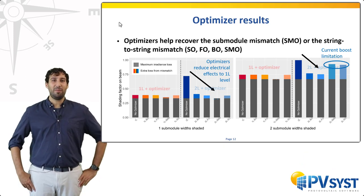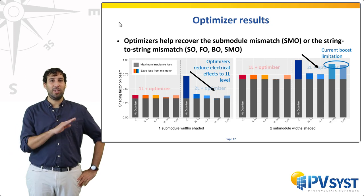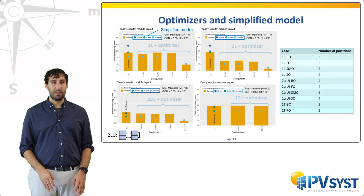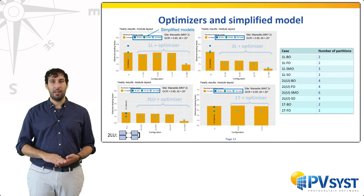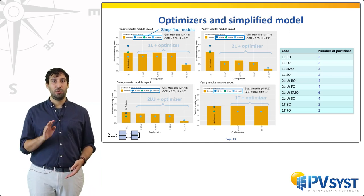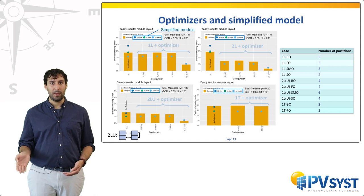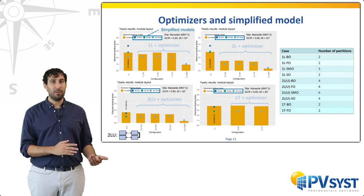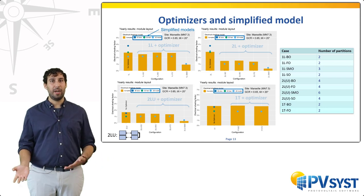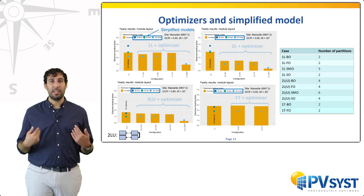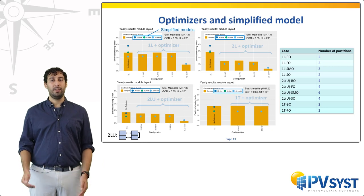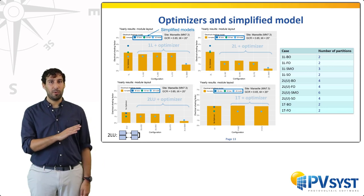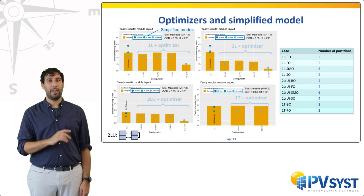Here we show that the simplified model can replicate most situations quite systematically. The four plots selected cover the most common cases: 1L, 2L, 2LU (meaning a string on two rows), and 1T. In the same situation as for the PVSEC results — 0.65 GCR on 20 degrees tilt — with an adapted choice of partitioning, one can replicate the detailed model quite well. The partitioning used to do so is summarized in the table on the right.